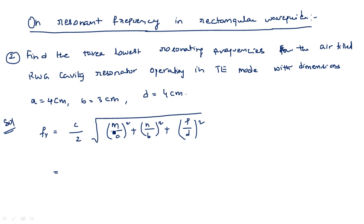To calculate the resonating frequency for a particular mode, we need the values of m, n, and p. Let us simplify using our known values: c=3×10¹⁰ cm/s, a=4 cm, b=3 cm, d=4 cm.